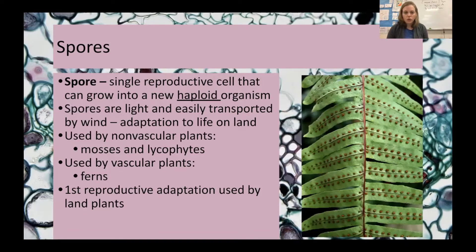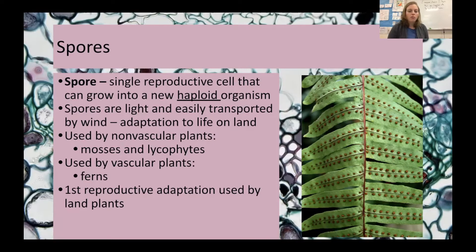Spores are single-celled and haploid — only one set of DNA — and they're very light and easily transported by the wind. This is a very primitive adaptation used in algae. Algae living in ponds or near the ocean get exposed to air when water dries out or low tide hits. Some algae survive better in drier conditions, passing on that trait, and eventually we start seeing tiny plants growing on land but still staying close to water, like moss.